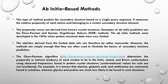Chou and Fasman devised this table in the 1970s when protein structural data was very limited. The table contains scores showing in which cases a particular amino acid was observed to fall into helix, strand, or beta turn. For example, it is known that alanine, glutamic acid, and methionine are commonly found in alpha helices, whereas glycine and proline are much less likely to be found in such structures.